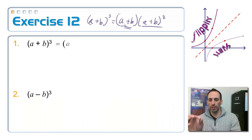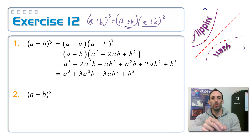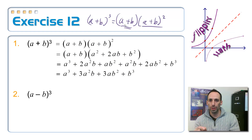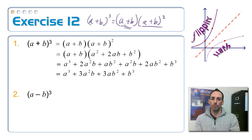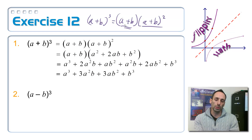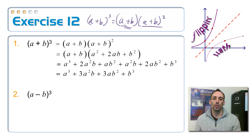Take (a + b) multiplied by (a + b)². The second factor is a perfect square trinomial: a squared plus 2ab plus b squared. Then apply the distributive property from the first set of parentheses to the second, and combine like terms. The final answer is a cubed plus 3a squared b plus 3ab squared plus b cubed.